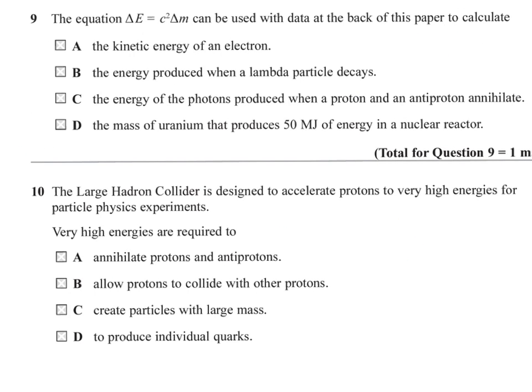Question 9. Now, the equation delta E equals C squared delta M can be used with the data at the back of this paper to calculate one of these things. Well, the kinetic energy of an electron, the energy produced when a lambda particle decays, the energy of the photons produced when a proton and antiproton annihilate, the mass of uranium that produces 50 megajoules of energy in a nuclear reactor.